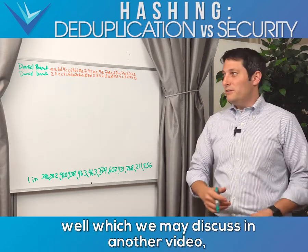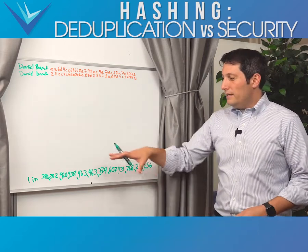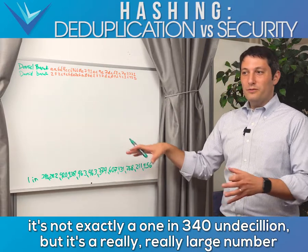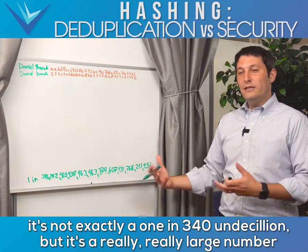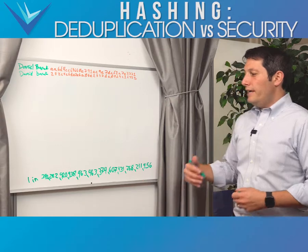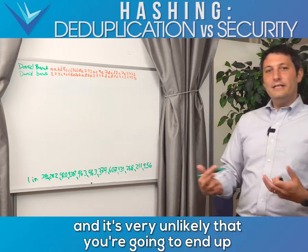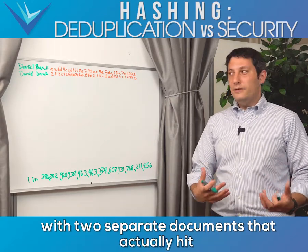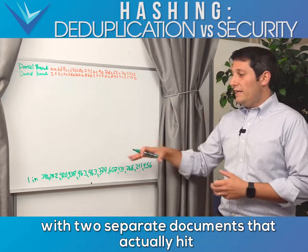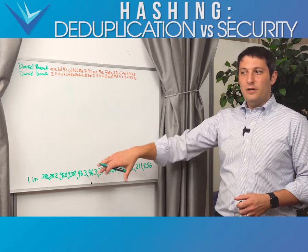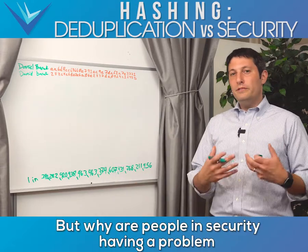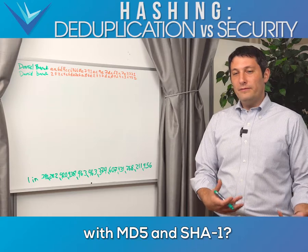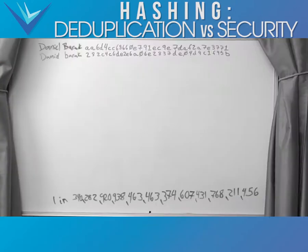When you get into things like the birthday paradox — which we may discuss in another video — it's not exactly one in 340 undecillion, but it's still a really large number. It's very unlikely that you're going to end up with two separate documents that hit on that exact same hash value.